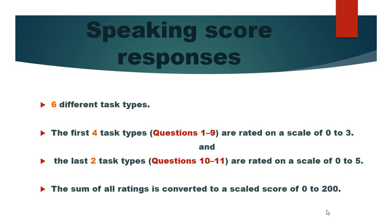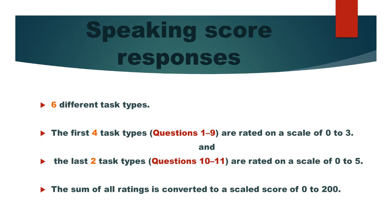The speaking test includes 6 different task types. The first 4 task types, questions 1 to 9, are rated on a scale of 0 to 3, and the last 2 task types, questions 10 and 11, are rated on a scale of 0 to 5. The sum of all ratings is converted to a scaled score of 0 to 200.